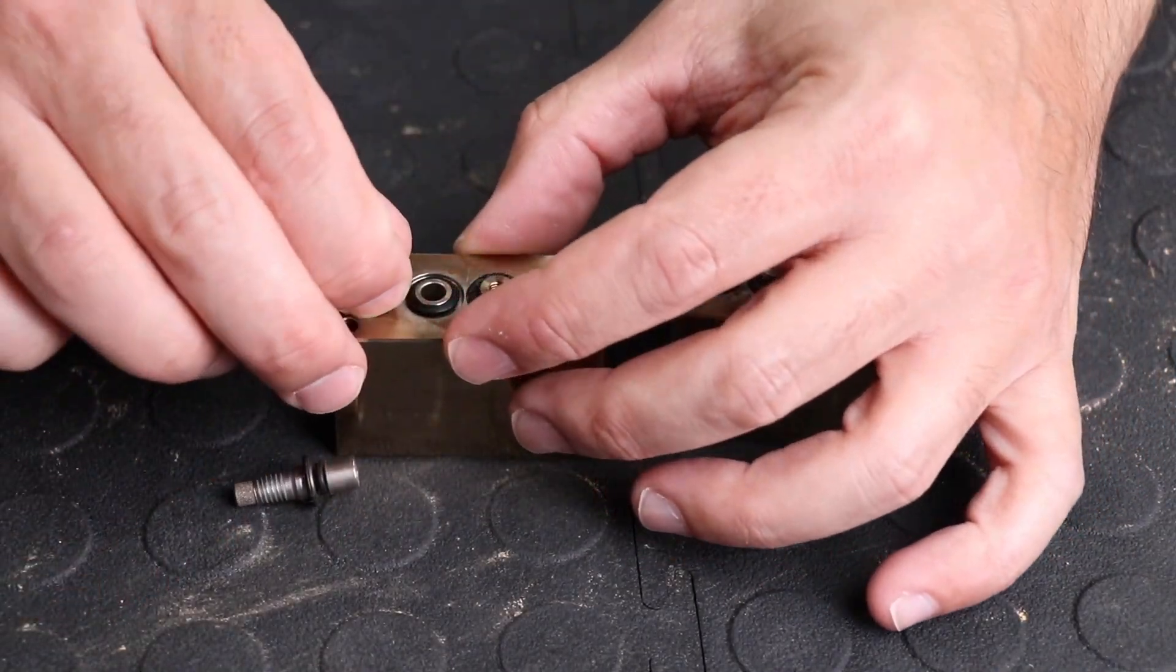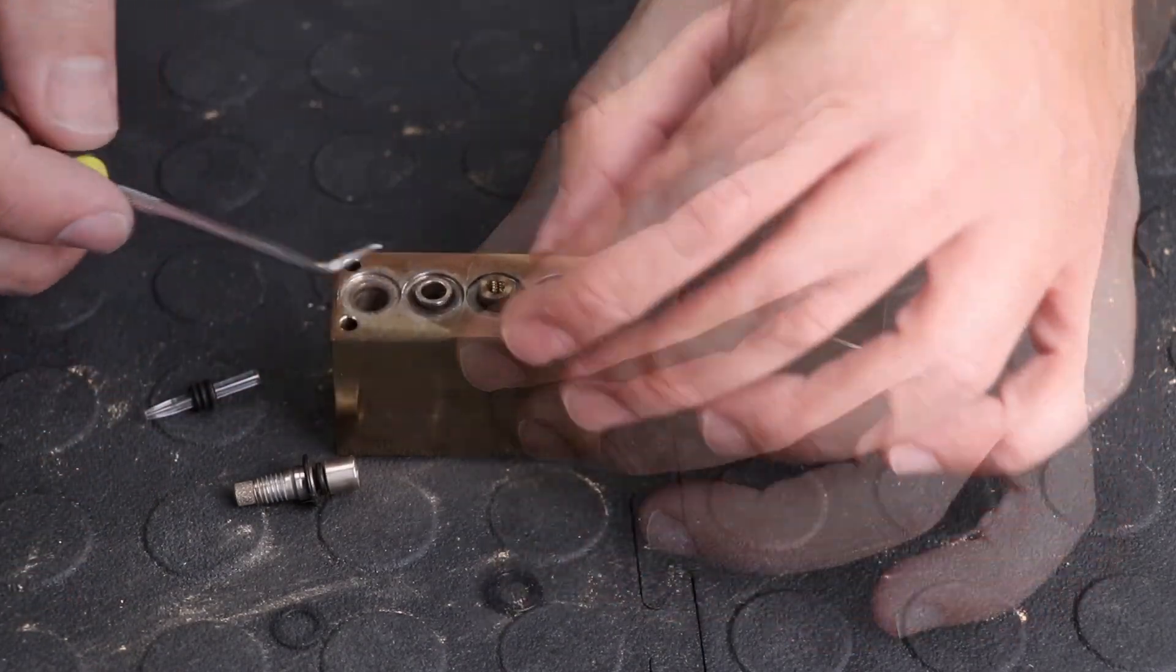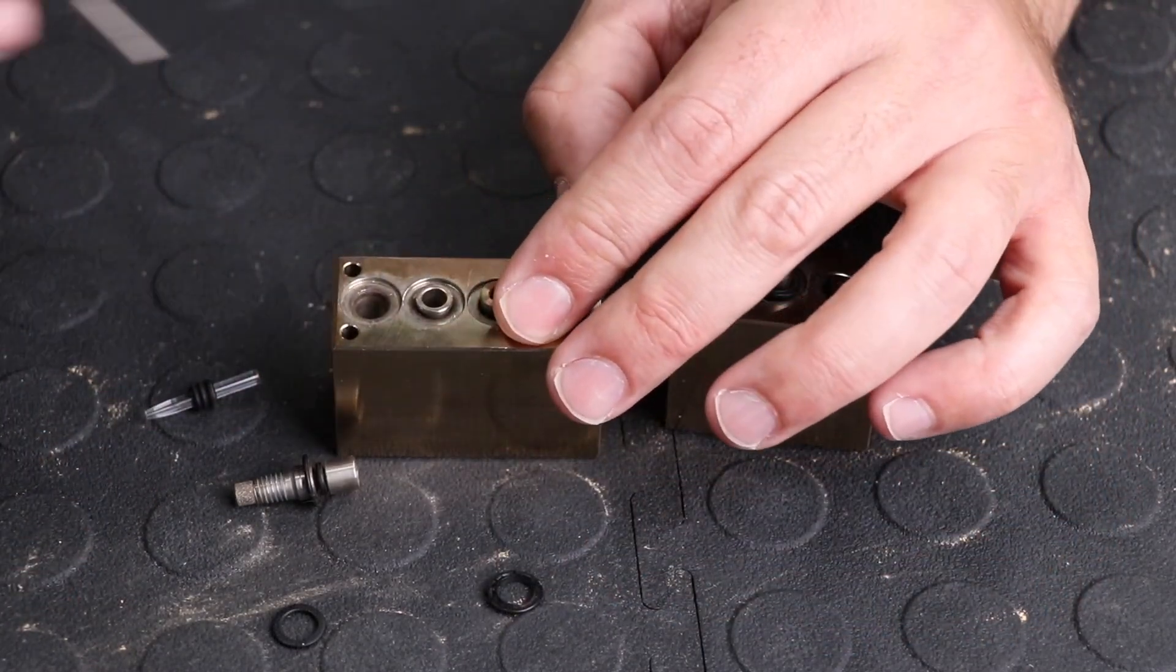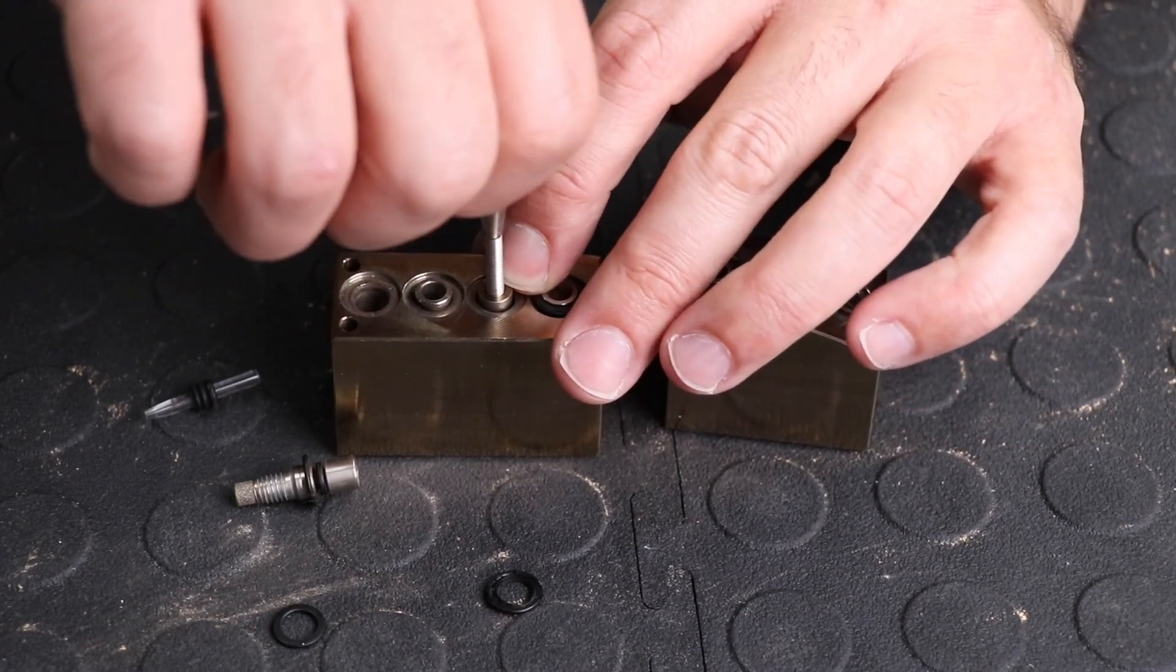Here is an abbreviated version of the rebuild sequence. Once the components have been cleaned and the O-rings replaced, the blocks can be reinstalled.